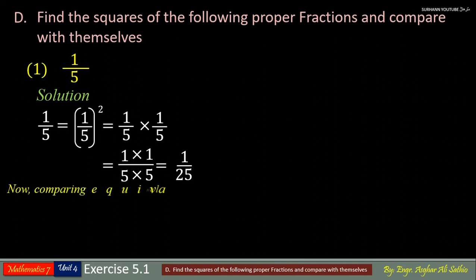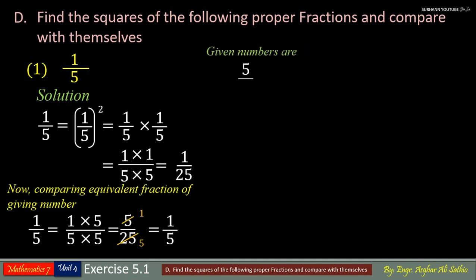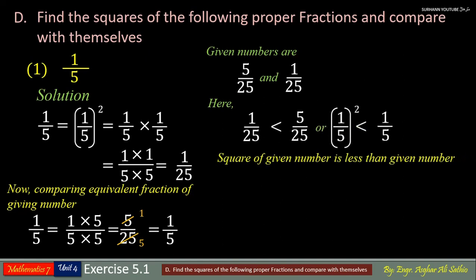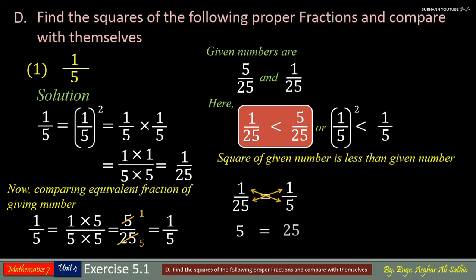Now comparing the fractions: the given numbers are 5 upon 25 and 1 upon 25. You may note that 1 upon 25 is less than 5 upon 25, so the square of a given number is less than the given number. If you are unable to identify which number is greater or less, cross multiply the fractions — multiply the numerator on the left-hand side by the right-hand side denominator, and vice versa. You may note: 5 means 1 upon 25 is less than 25 means 1 upon 5.